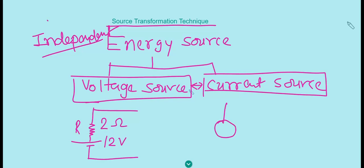Now about the current source: the symbol of a current source has an arrow that shows the direction of current. An ideal current source should provide constant current to the load, so the internal resistance should be as high as possible. You can say that for an ideal current source the internal resistance should be infinite, but practically it is not like that.